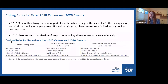In one example, a response of Hispanic, white, and Chinese was coded as only white and Chinese in 2010 because of the prioritization of race responses over Hispanic origin responses when there were more than two responses in a single write-in line. In 2020, all three of those responses were coded. In another example, a response of Spanish, Mexican, Samoan, and Chamorro was only coded as Samoan and Chamorro in 2010. In 2020, all four of those responses were coded.